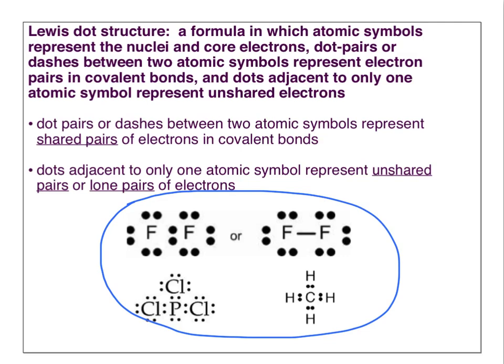We draw our electrons in pairs because there are two electrons allowed per orbital. Shared pairs of electrons can be represented with a pair of dots, like this, or with a dash, like this.